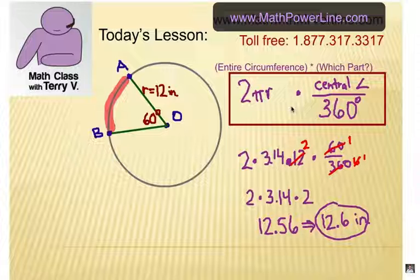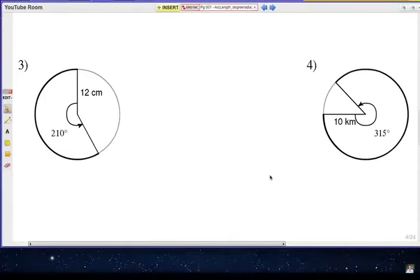And now get a piece of paper and a calculator and try these two problems. Take a look at numbers 3 and 4, and we are looking at the length of the arc in the bold font here for a 210 degree central angle, and number 4 for a 315 degree central angle. Pause the video and give it a shot.